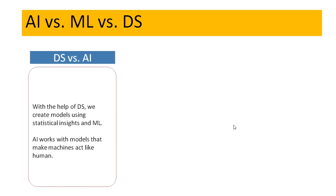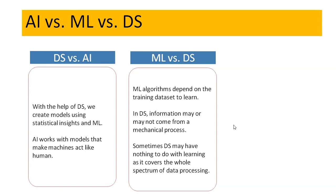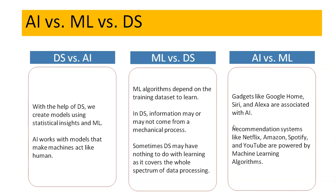When it comes to data science versus AI: with data science we create models using statistical insights and ML; AI works with those models to make machines act like humans. When it comes to machine learning versus data science: machine learning algorithms depend on a training data set to learn the logic, while in data science information may or may not come from a mechanical process — sometimes data science may have nothing to do with learning, as it covers the whole spectrum of data processing. When it comes to AI and machine learning: gadgets like Google Home, Siri, and Alexa are associated with artificial intelligence, while recommendation systems like Netflix, Amazon, Spotify, and YouTube are powered by machine learning algorithms.